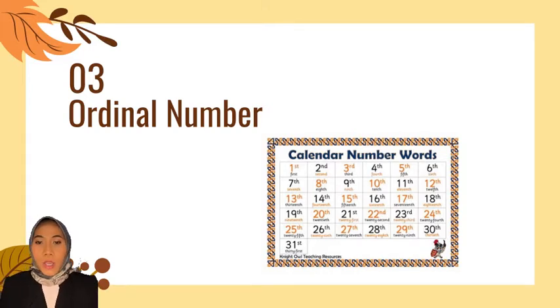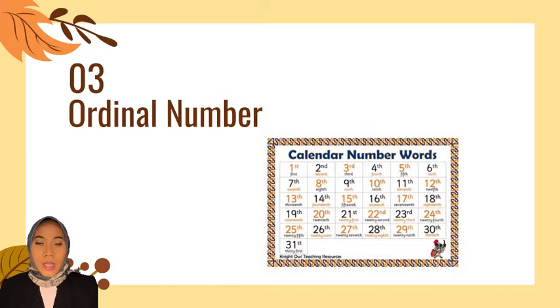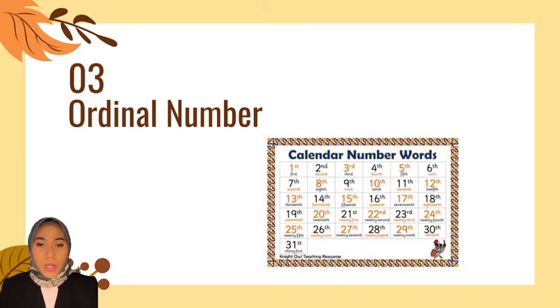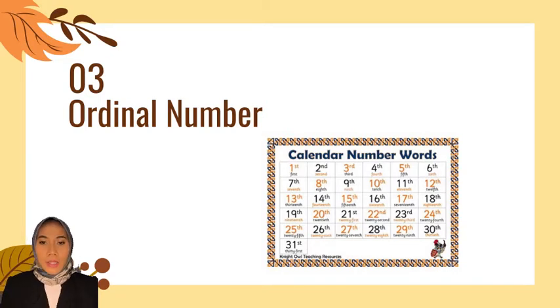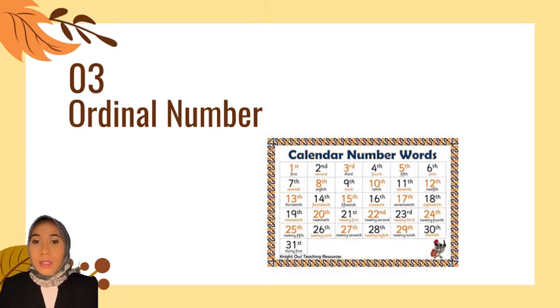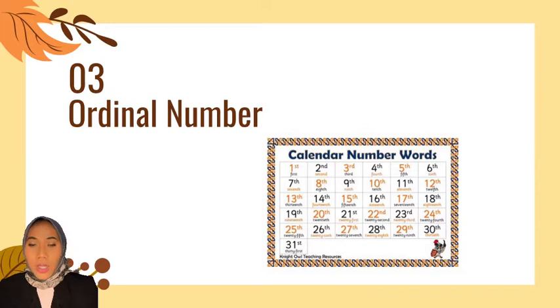Next lesson is about ordinal numbers. Examples of ordinal numbers are: first, second, third, fifth, sixth. In a sentence, the example is: today is the sixth of October 2021.